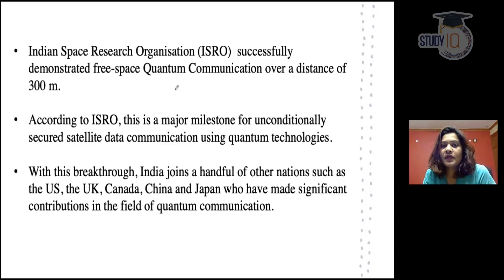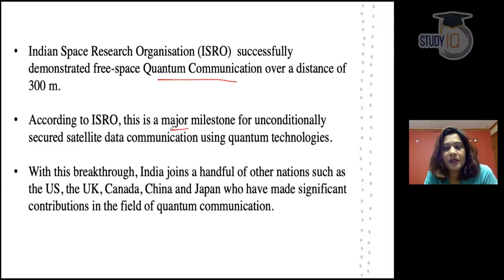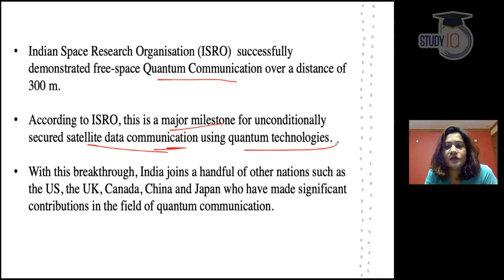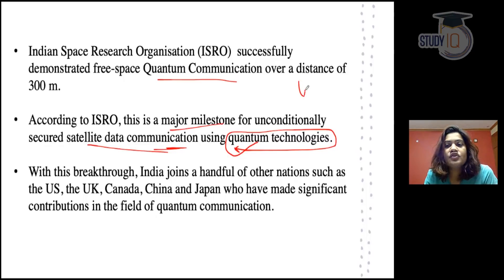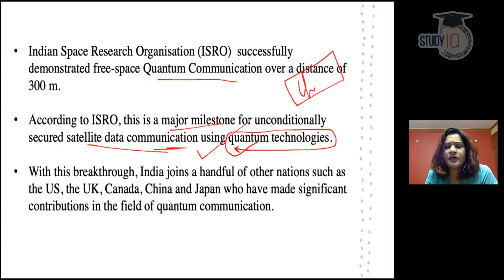ISRO has demonstrated quantum communication at 300 meters. This is a major milestone for us so that our satellite data can be secured using quantum technologies. Quantum technologies are not much used yet - it is very limited. For example, China is the one country that has started using quantum technologies. It is very, very important as cutting-edge technology.